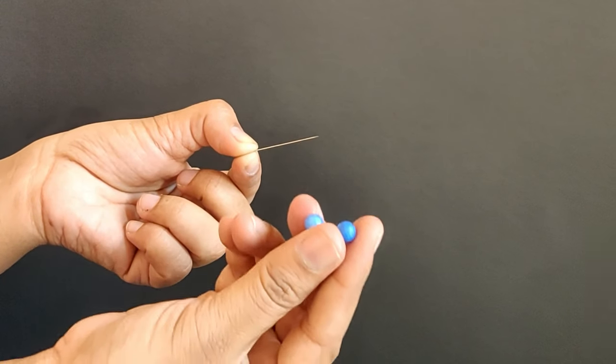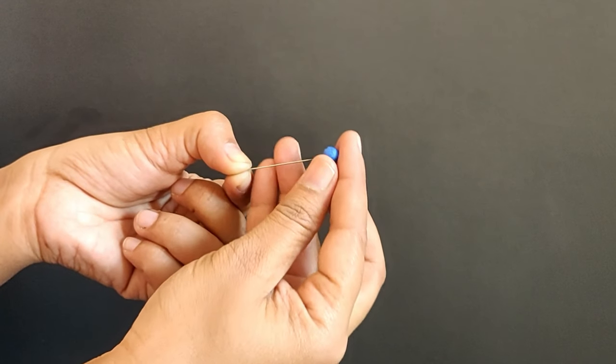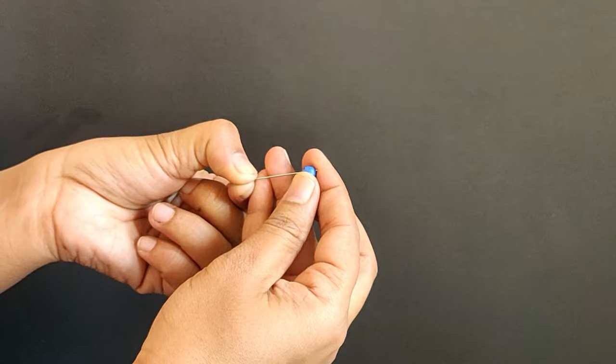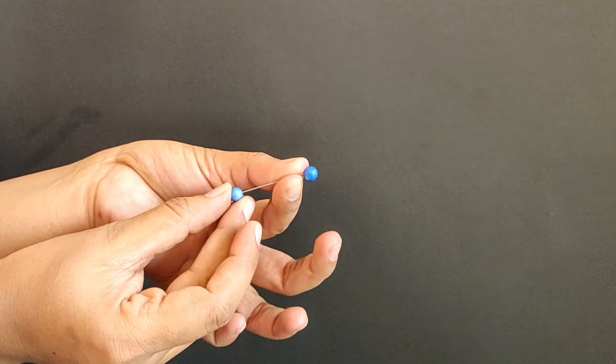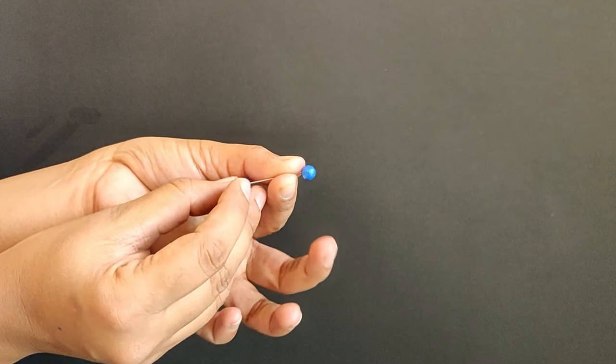Once the needle has been magnetized, attach the two styrofoam balls to the ends of the needle. This will help the needle float in water.